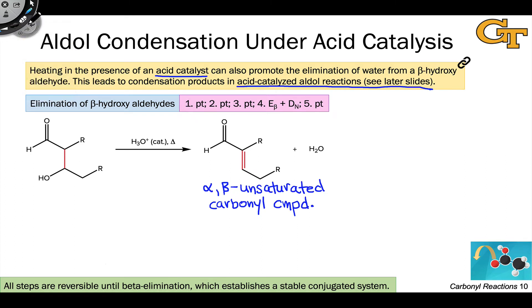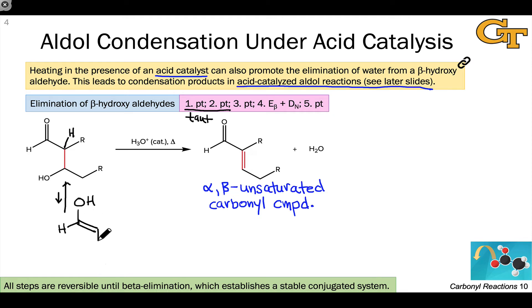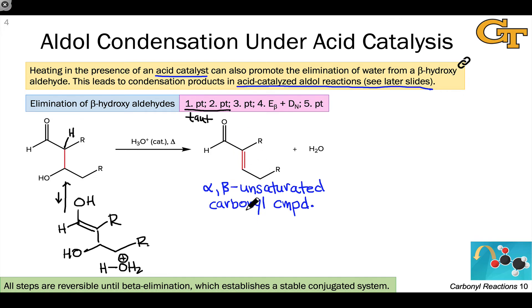Instead, tautomerization occurs in the first two elementary steps to give an enol intermediate. I'll just draw the enol tautomer that forms. Tautomerization produces an enol with a hydroxyl group beta to the original carbonyl carbon. This is acid-catalyzed, so we still have acid around, and we're heading toward elimination of water to set up the unsaturated carbonyl compound product.